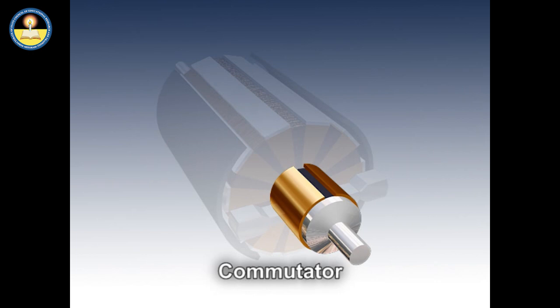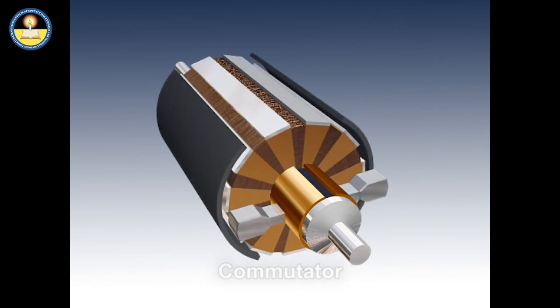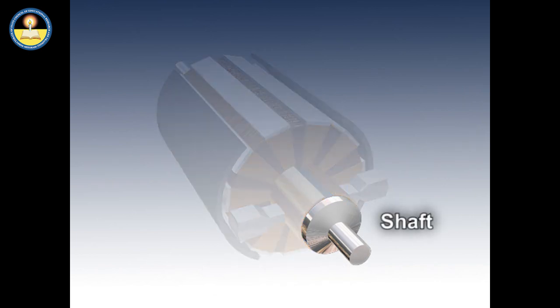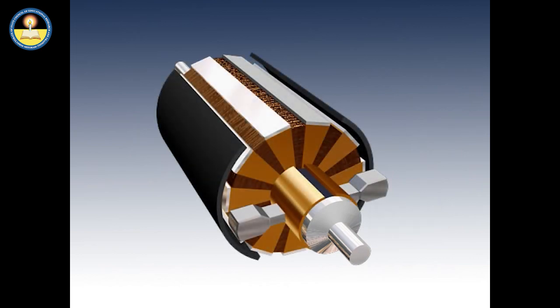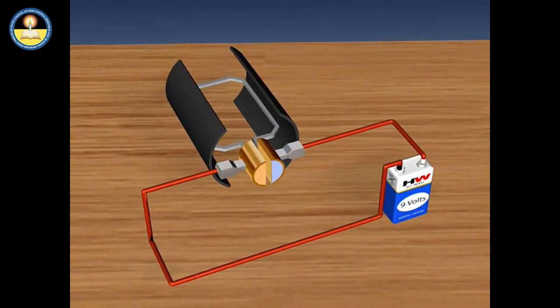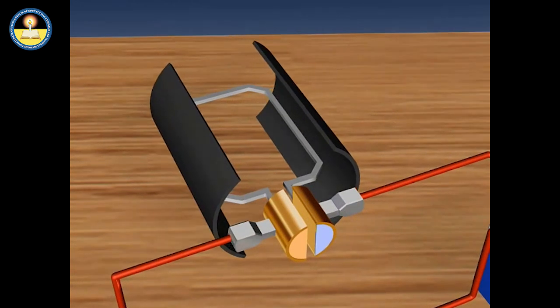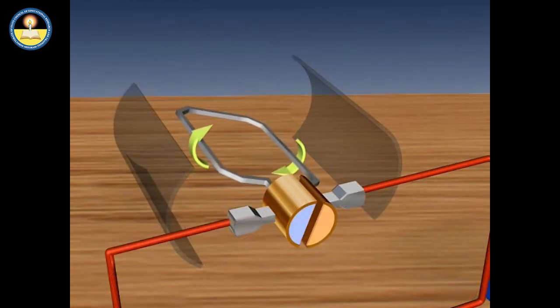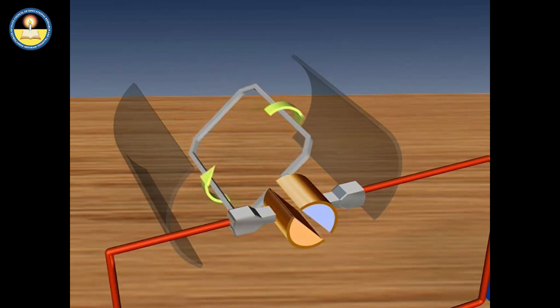The commutator is a copper ring split into two halves. The inner sides of these split rings are insulated and attached to an axle called the shaft of the motor. When the coil rotates, the split rings also rotate. The external conducting edges of these split rings touch two conducting stationary carbon brushes. Battery terminals are connected to the brushes so that the current can pass through the coil. The function of the commutator is to reverse the direction of the current.